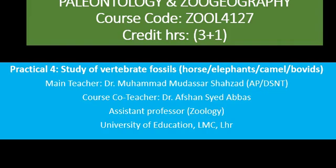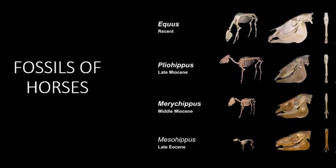Today we are going to learn about the different types of vertebrate fossils like horses, elephants, camels, and bovids. By recalling your theory class, you should know that vertebrates have evolved from ancient times till date.